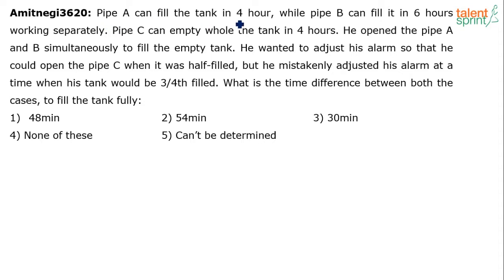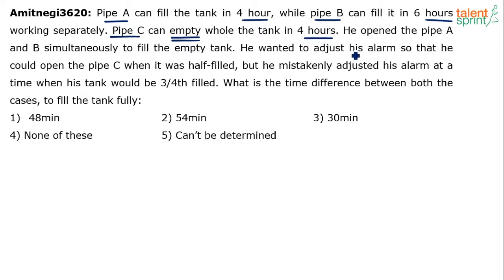Pipe A can fill the tank in 4 hours, while pipe B can fill it in 6 hours working separately. Pipe C can empty the whole tank — remember, pipe C is doing negative work — it can empty the whole tank in 4 hours. So pipe A fills in 4 hours, pipe B fills in 6 hours, but pipe C can empty the whole tank in 4 hours.